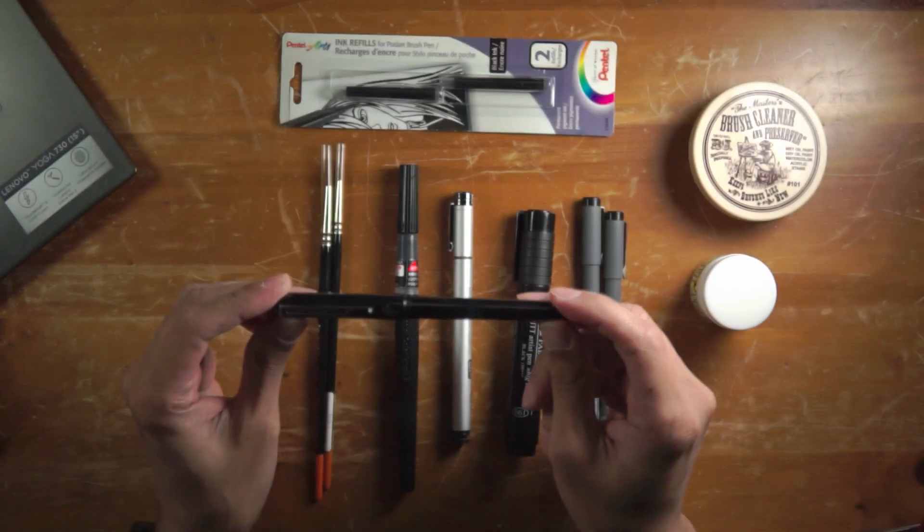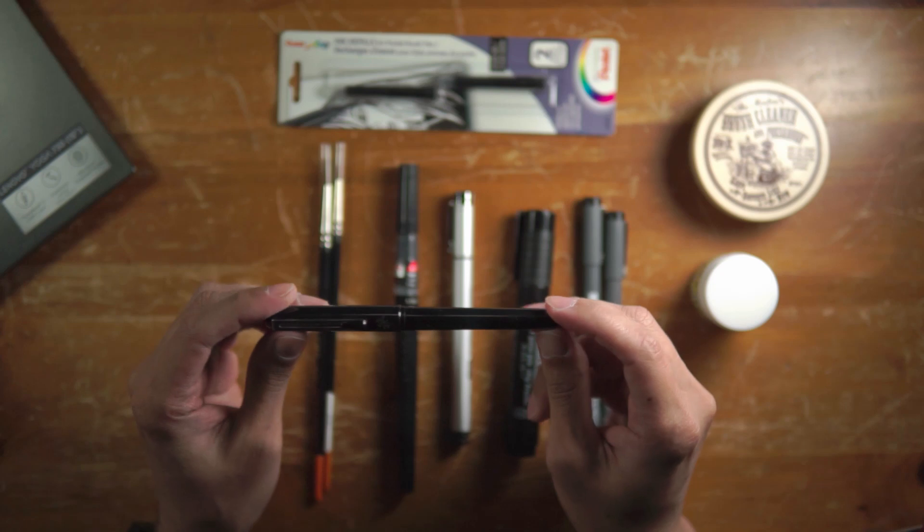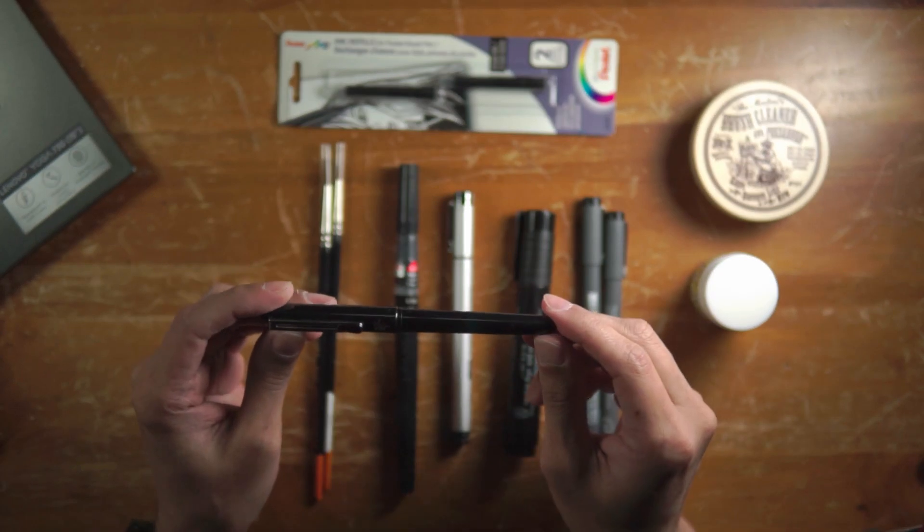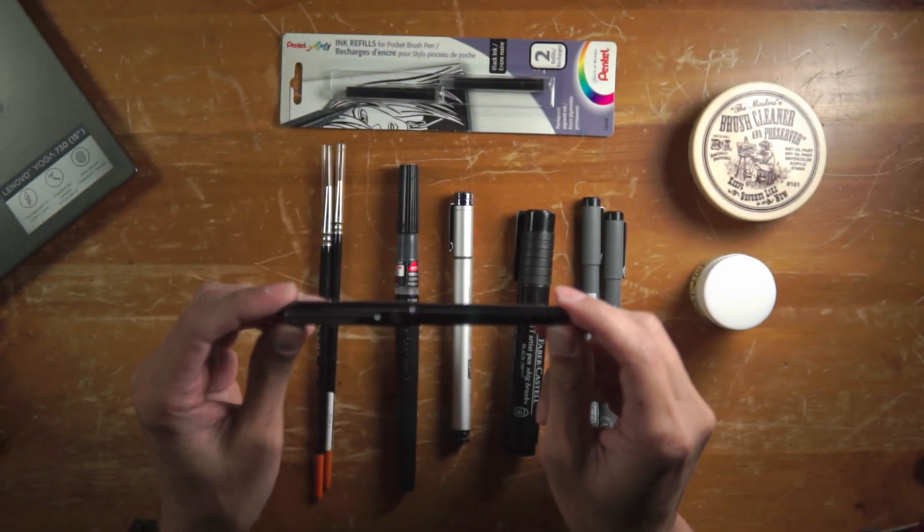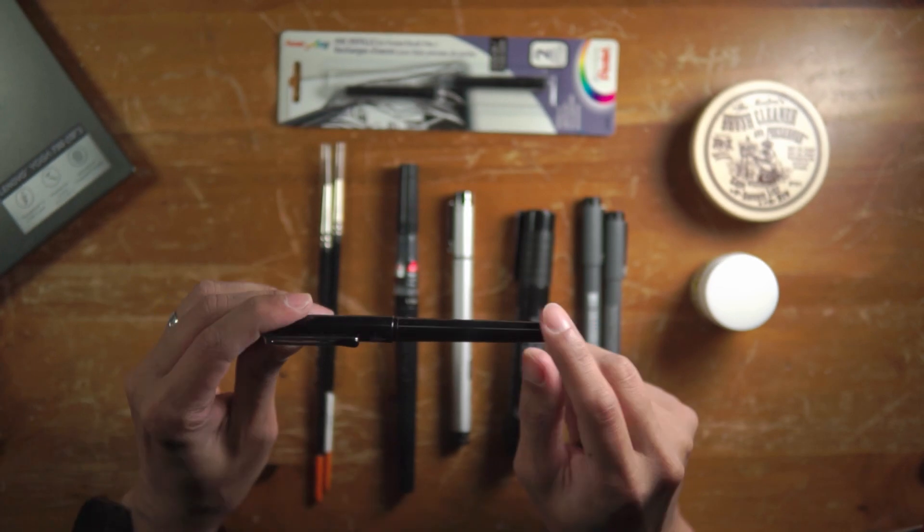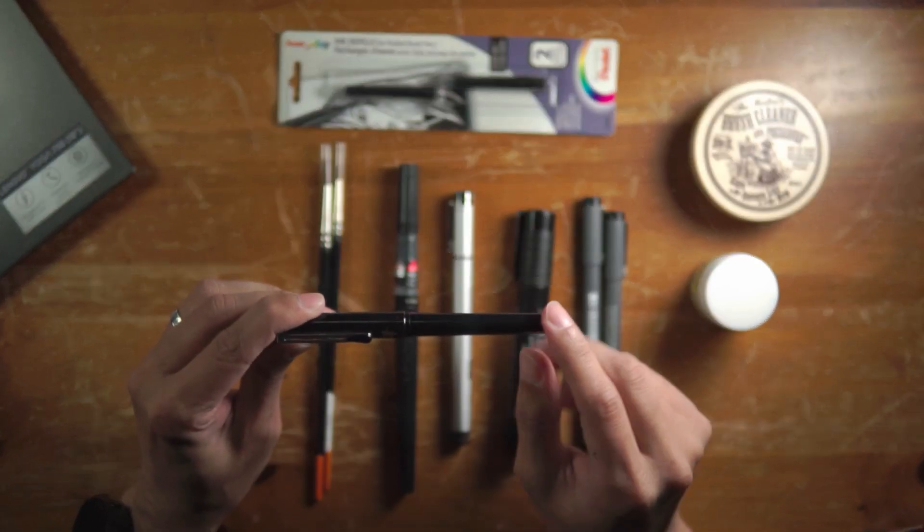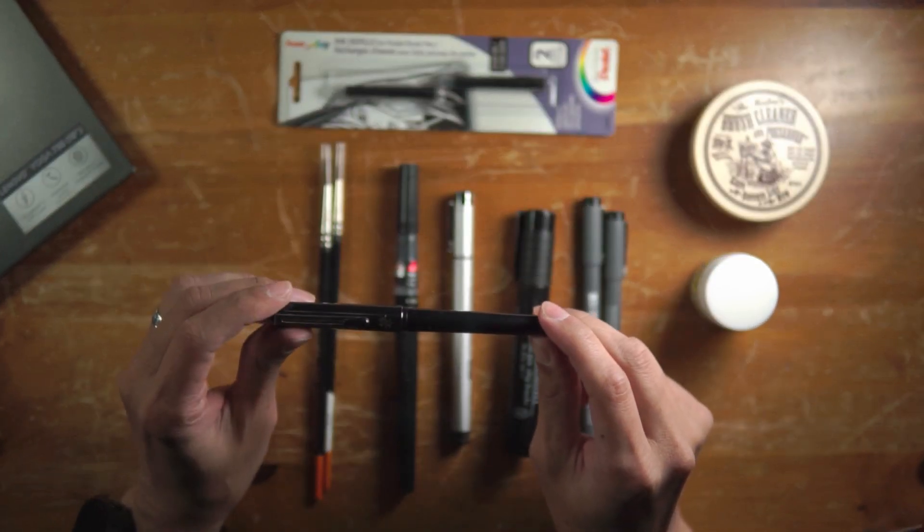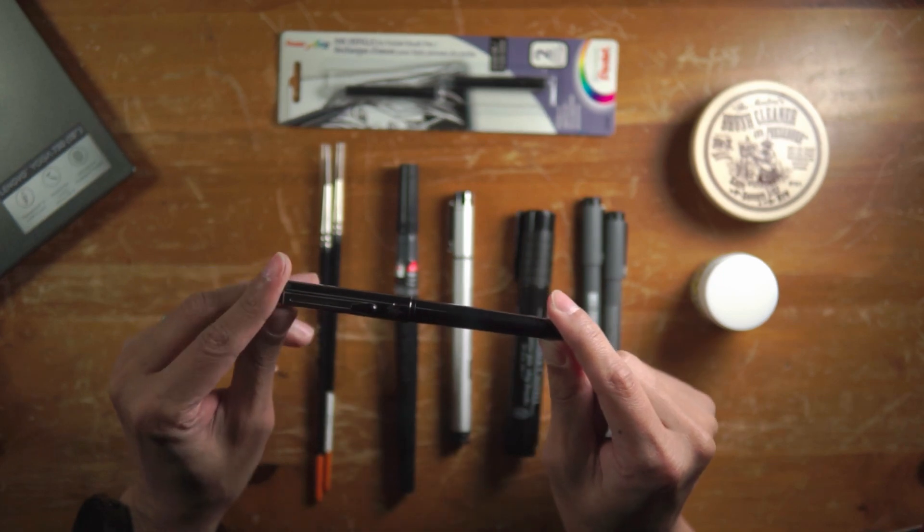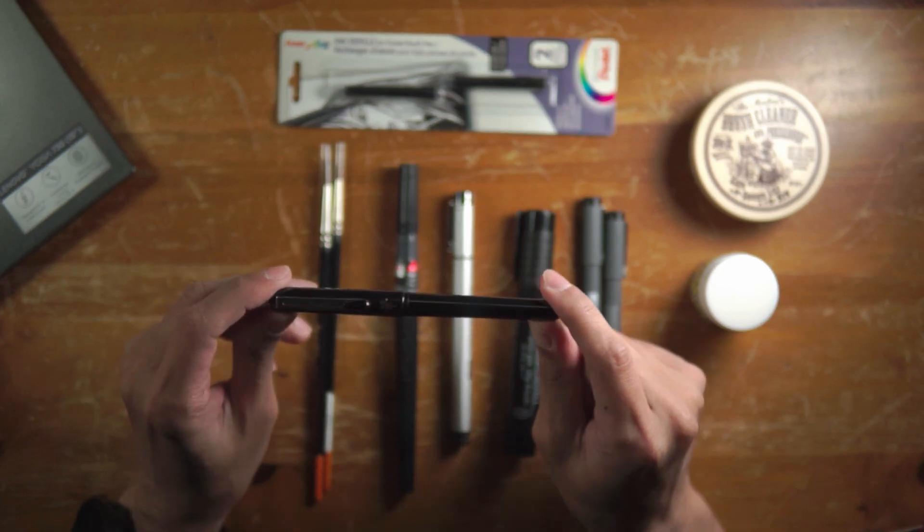If you use a lot of blacks and you're covering them with this, you're probably going to go through a lot of cartridges. But if you use this like I do, just to do line work, basic line work, then you're not going to go through it as quickly as you would if you were filling large black areas.